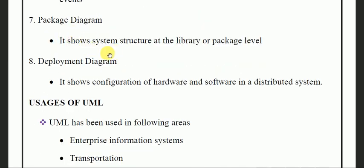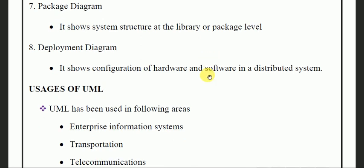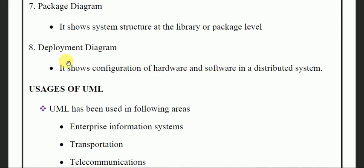Package diagram shows the system structure at a package level. Packages and libraries are represented in the package diagram. The deployment diagram shows the hardware and software configuration in a distributed system — the systems used in real life where the network is distributed. We can see how hardware and software are configured in the deployment diagram.